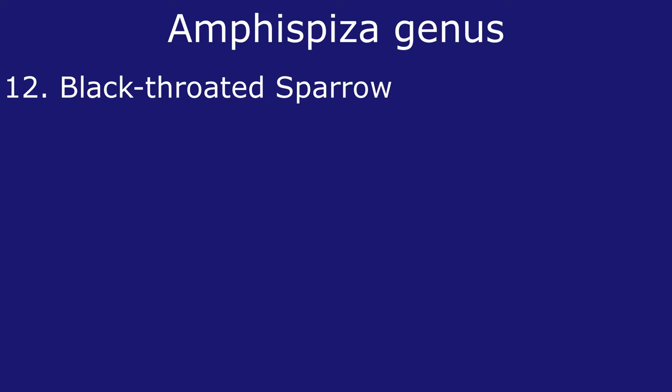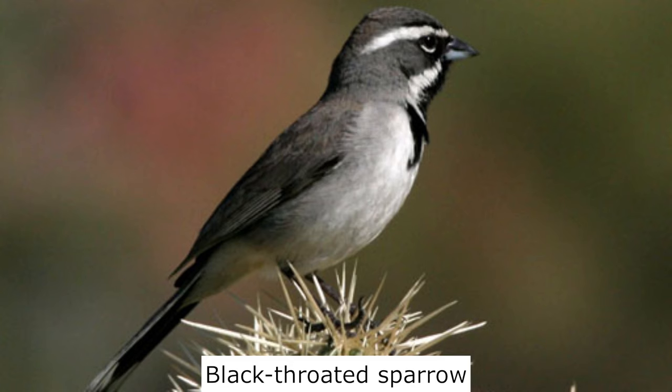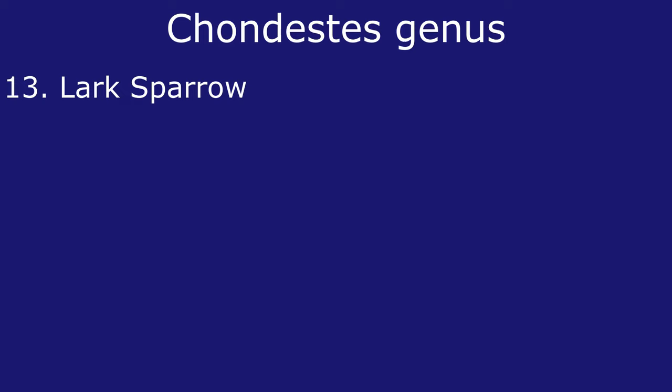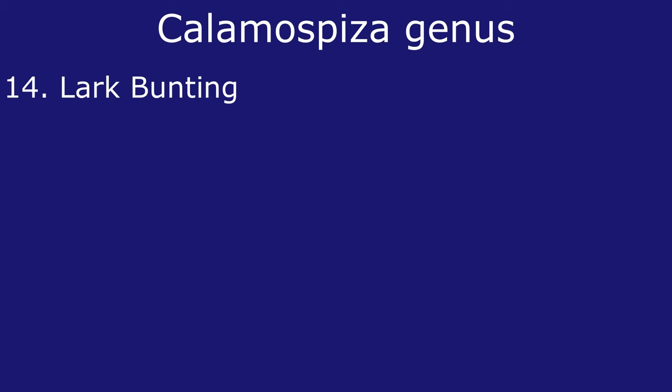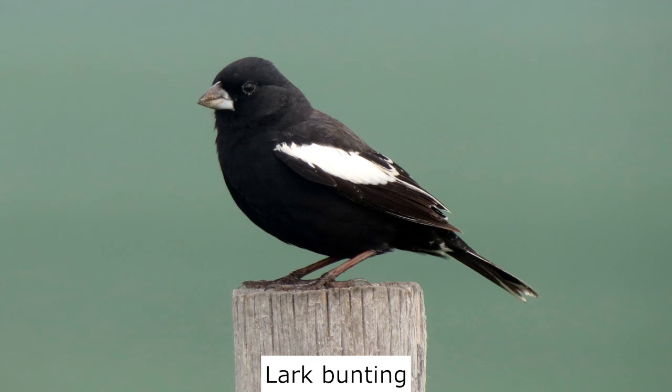The black-throated sparrow is found in the western United States in open, shrubby desert habitat and is not likely to be found with house sparrows due to its unique habitat. The lark sparrow is found roughly in the western two-thirds of the United States and south-central Canada — it is a bird of grasslands with few shrubs. The lark bunting is found in the central plains of the United States and southern Canada and is a grassland bird.